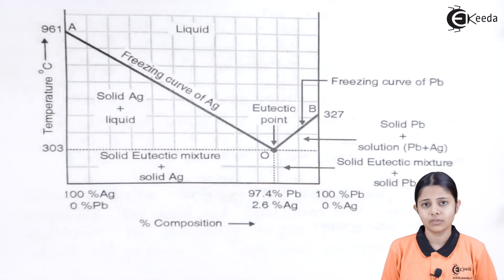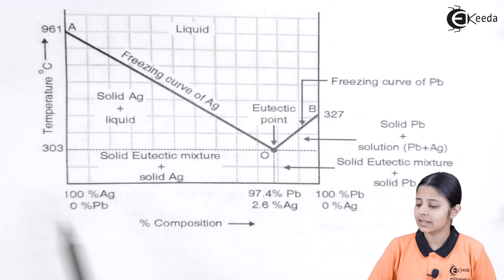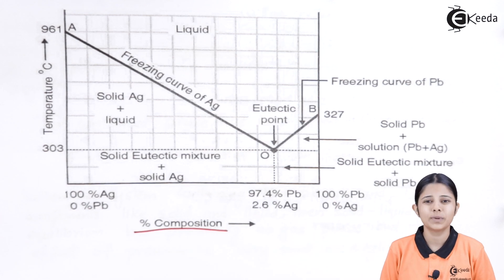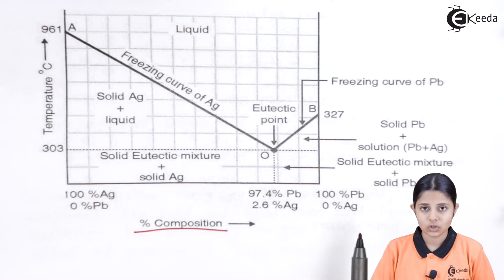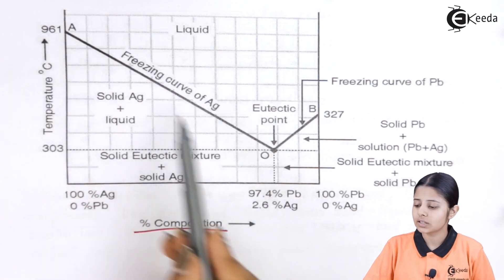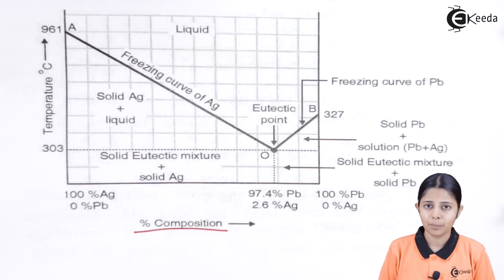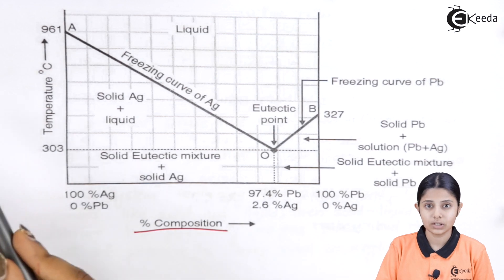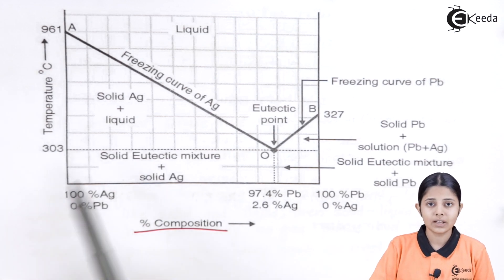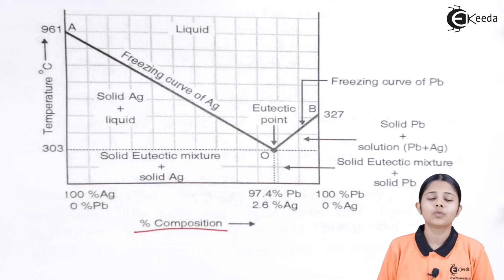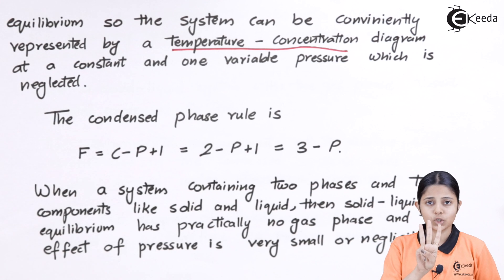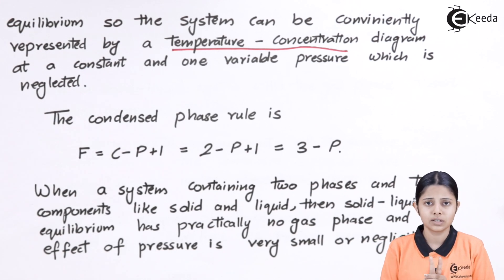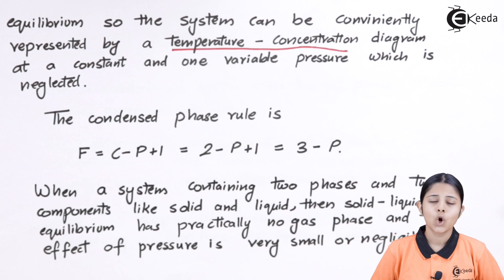The graph for the lead-silver system has two axes: the x-axis represents percentage composition (concentration) and the y-axis represents temperature. We study only concentration and temperature because we can vary them, but pressure has no influence on the system. Since one of the three dimensions is missing, we do not use the normal phase rule — instead we use the condensed phase rule, also known as the reduced phase rule.